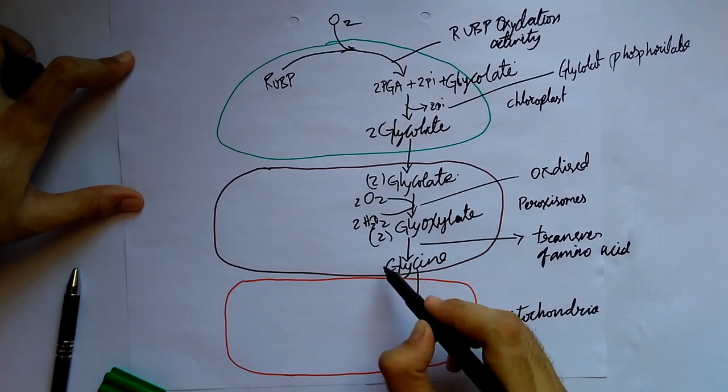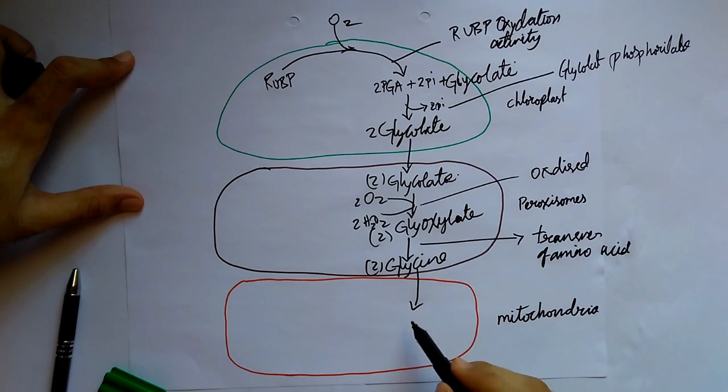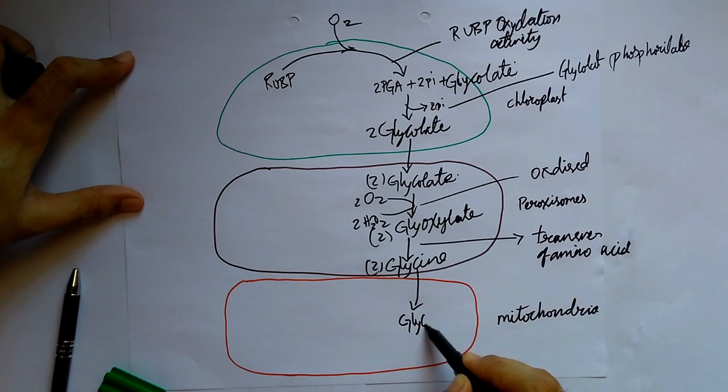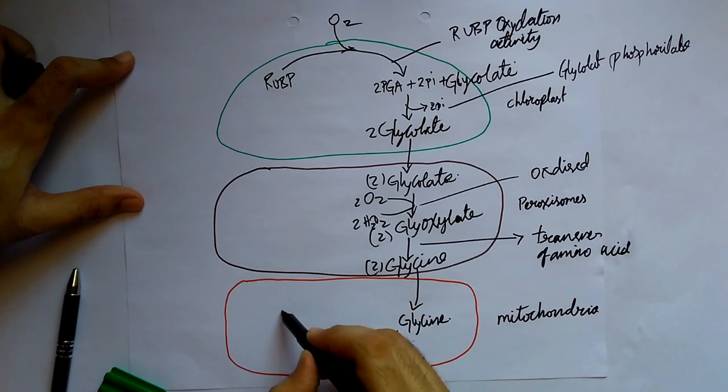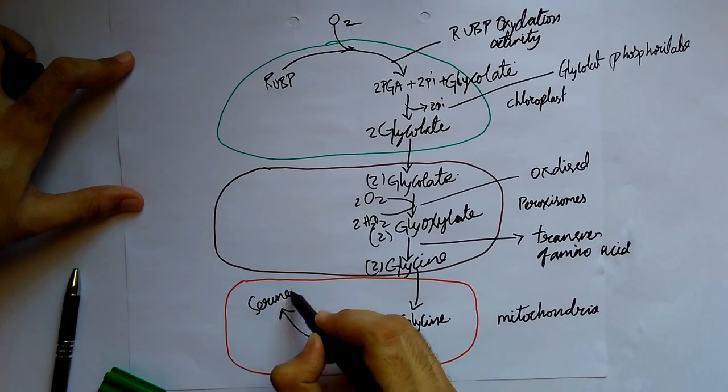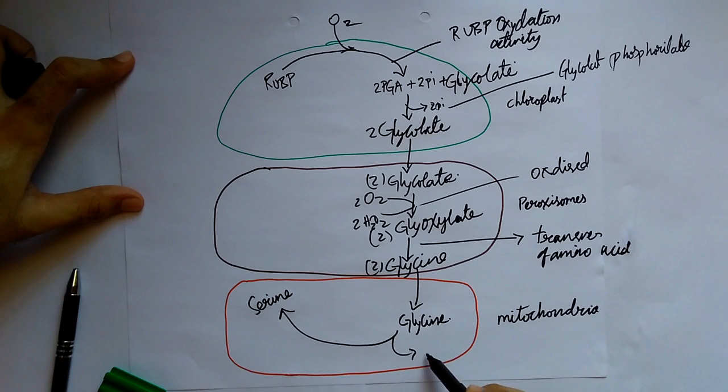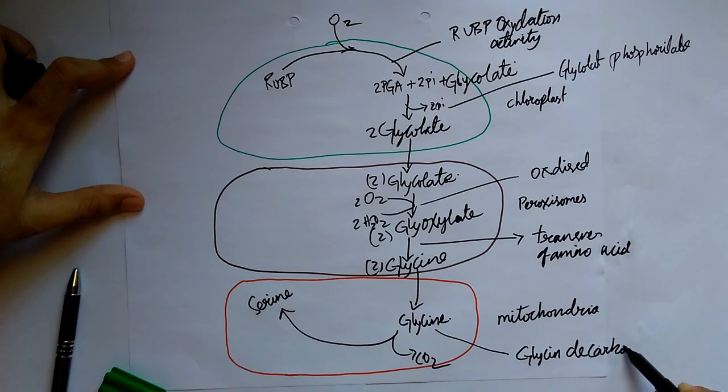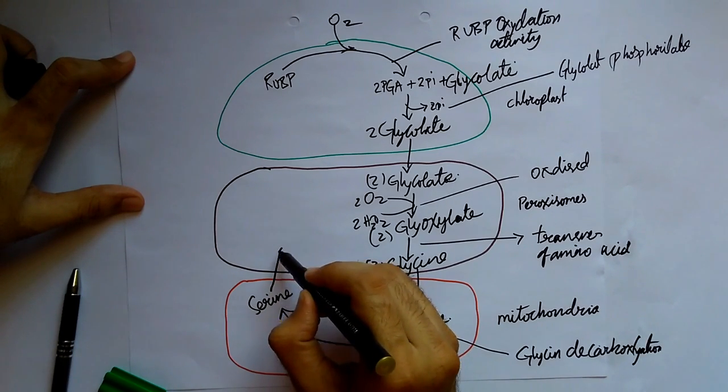After this, this glycine gets separated. You can see this is converted into serine and carbon dioxide comes out like this. Here glycine decarboxylation takes place where this serine is uptaken to the peroxisomes.